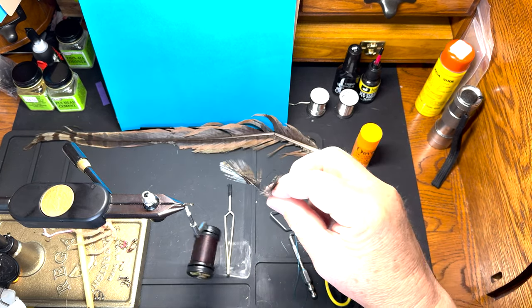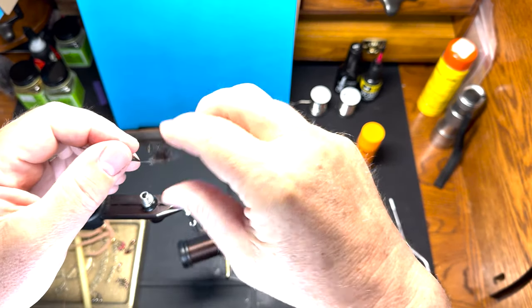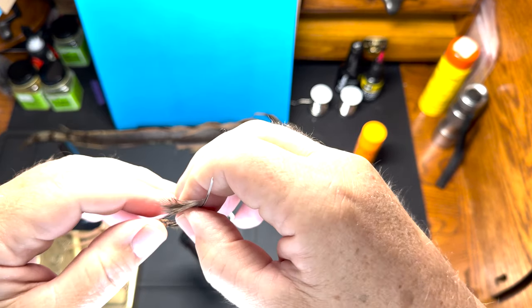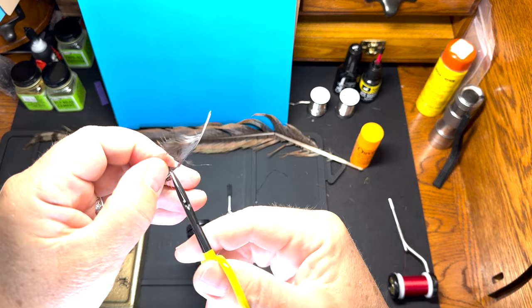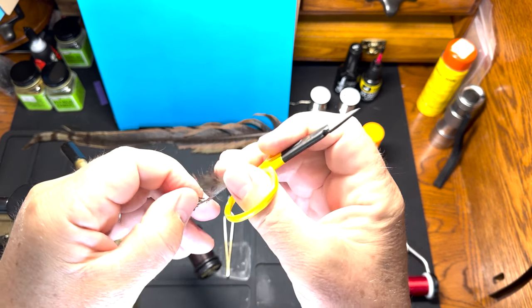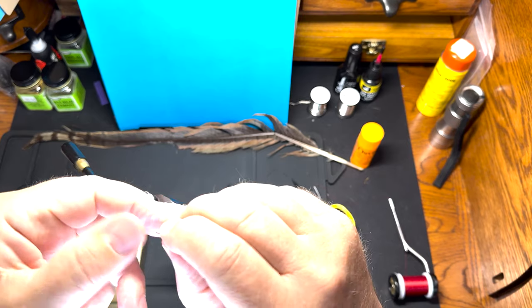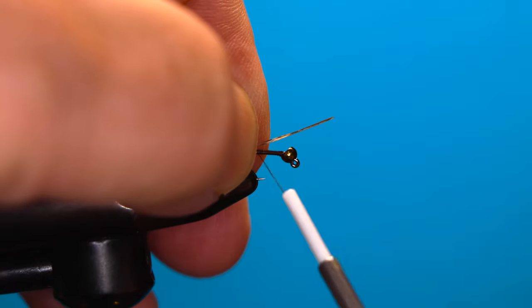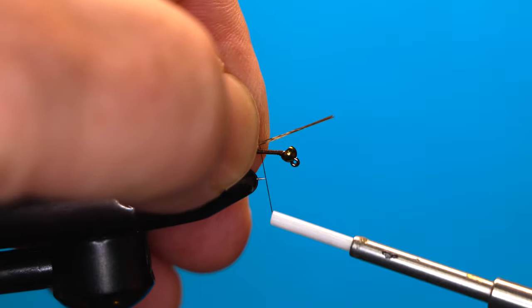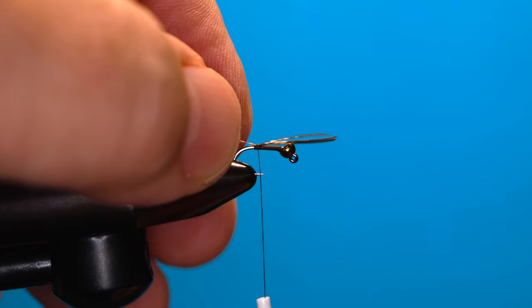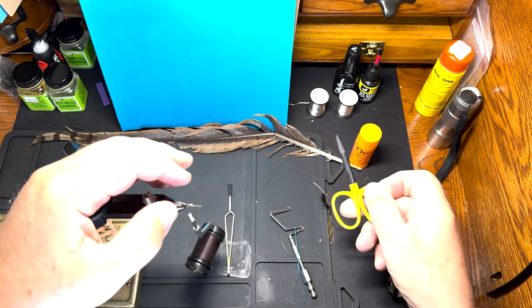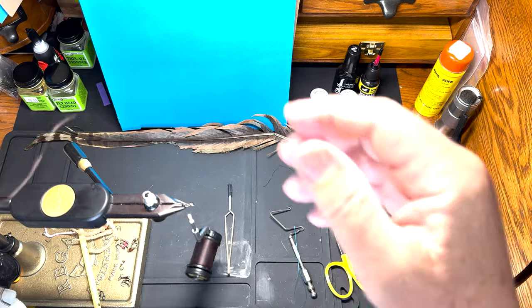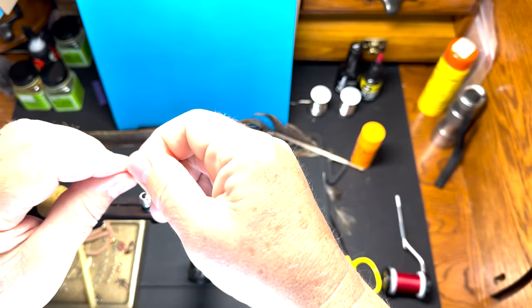We've got CDL for the tail, grab a couple fibers of that. I use fine copper wire for the rib. Put that right up into the bead.